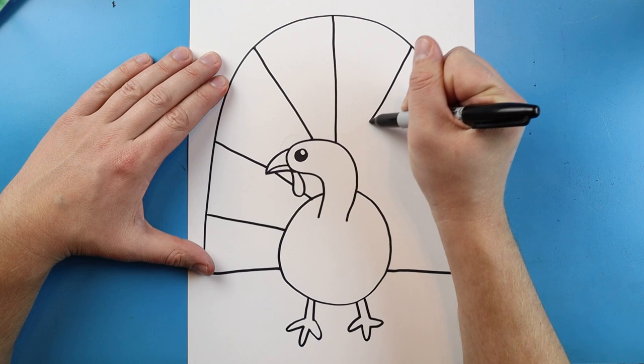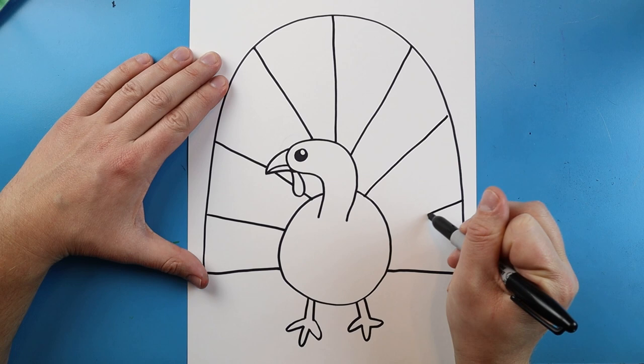And I'm just going to draw some lines. They're all going to angle down towards the turkey. And I'm going to try my best to keep the same amount of lines on each side.